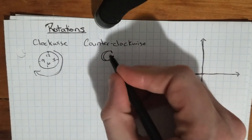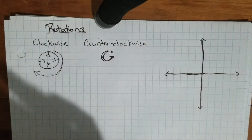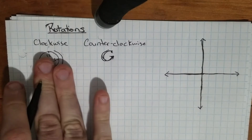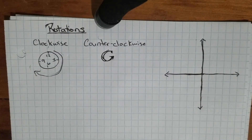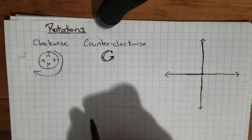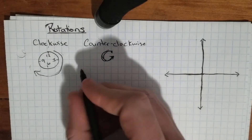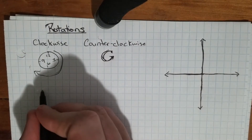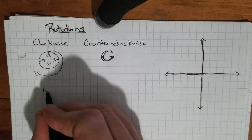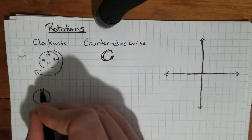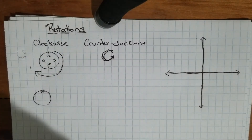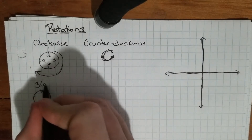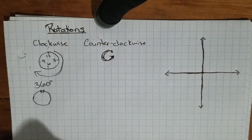Now that we understand the direction we're going to be spinning in — whether that's clockwise or counterclockwise — let's look at how much we need to spin it. In an entire circle, if we were to spin all the way around from beginning to end, ending right where we started, we call that a 360-degree turn. We end off where we began.